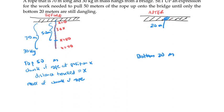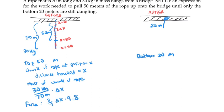The mass of a chunk of rope is going to be given by its linear density — 30 kilograms over 70 meters — times the length of the chunk of rope. The force on that chunk of rope is going to be its mass, so (3/7) delta x, times 9.8 from the acceleration due to gravity. To calculate the work on that chunk, we take the force times the distance, so that's (3/7) delta x times 9.8 times x.